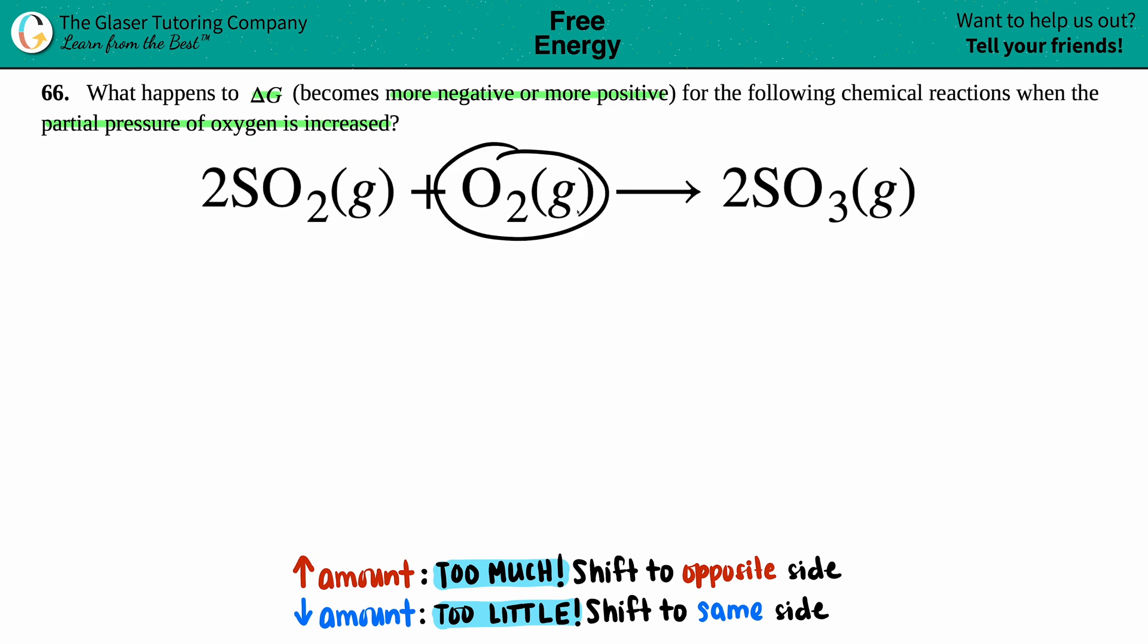They told us that the partial pressure of oxygen is increased. Here's my oxygen, O2. Whenever they say partial pressure, that just means it's a pressure of one single component. So the pressure of O2 is going to increase.